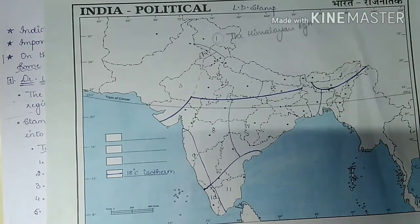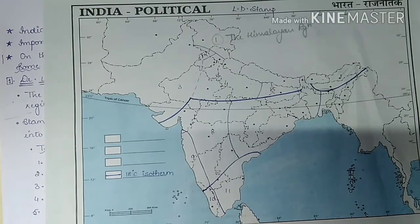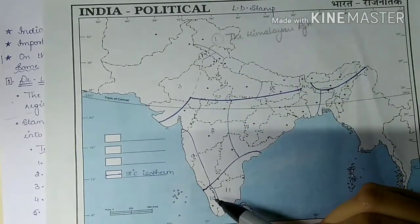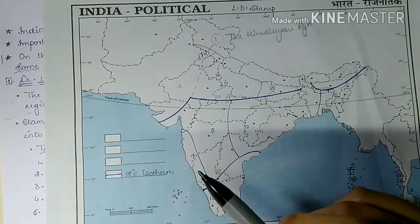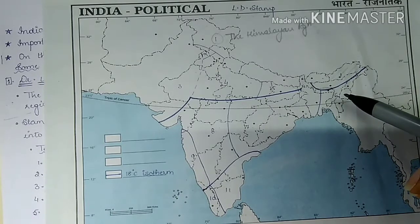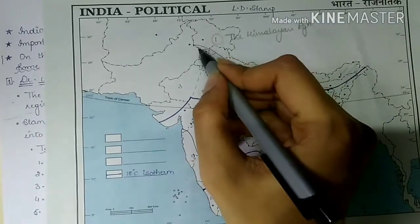In the Himalayan region, the winter temperature is 4 to 7 degrees Celsius and the summer temperature is 13 to 18 degrees Celsius. The higher reaches are perpetually covered with snow throughout the year. Average rainfall exceeds 200 centimeters in the east but is comparatively much less in the western part. Representative cities are Shimla in the west and Darjeeling in the east.